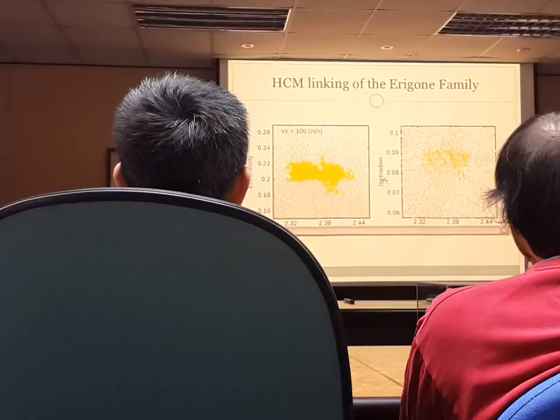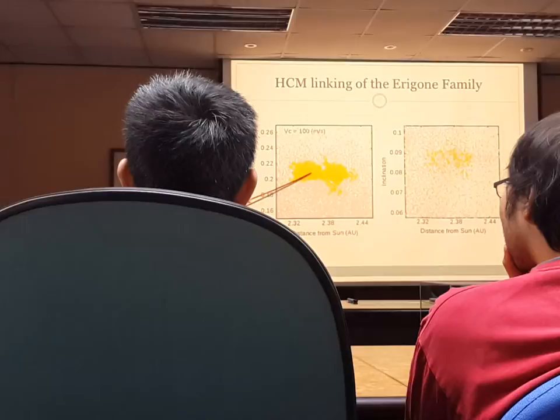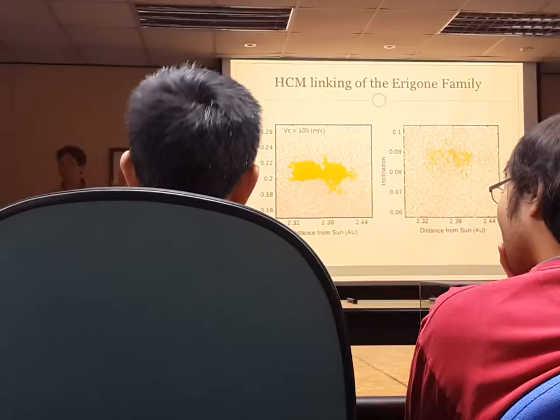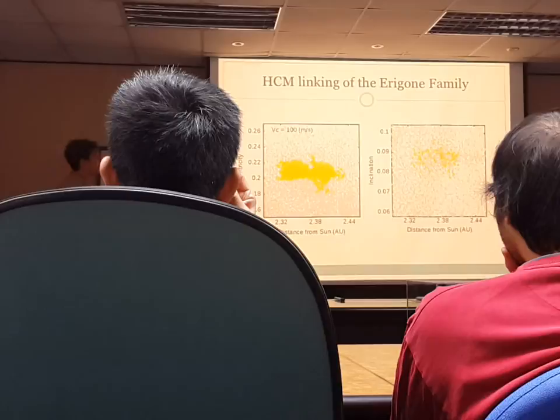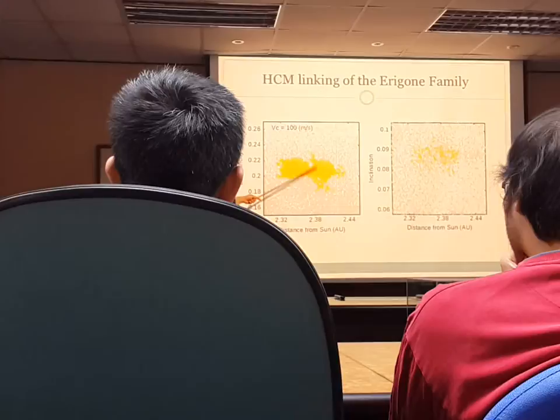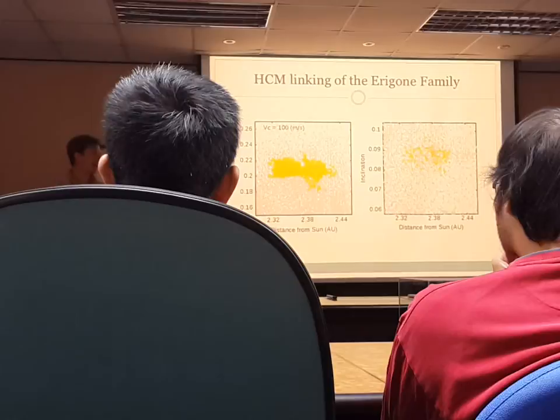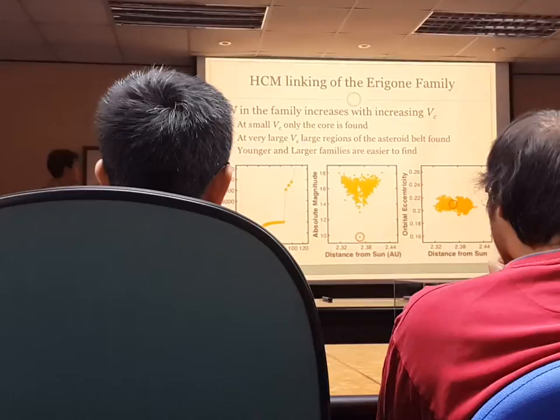Now, if we ran this further out to 200 meters per second, we would jump from just this family — the criteria would become big enough to grab the entire background around it, and eventually you'd link the entire asteroid belt. Looking at these linkings as a function of velocity criteria, you link very few objects, reach a plateau where you're linking this tight clustered family, and then beyond that plateau you're suddenly linking the entire asteroid belt. That tight clustered family usually stands out clearly in your linking number.